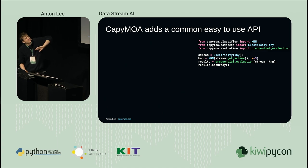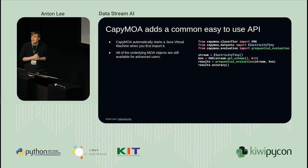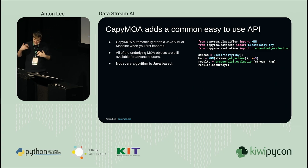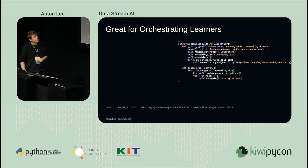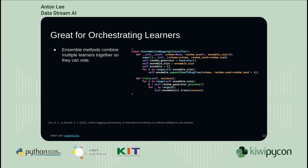Going from that complicated example, this is the API as it currently is for using Capimoa. Capimoa will automatically start the Java virtual machine when you first import it. All of the underlying MOA objects are still there for the people that understand MOA. And not every algorithm is Java-based, which is very important because there's all of these new deep learning things we want to take advantage of. It's very common to have ensemble methods, which is where you combine multiple learning algorithms together and they sort of vote.